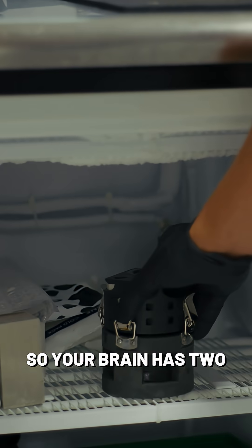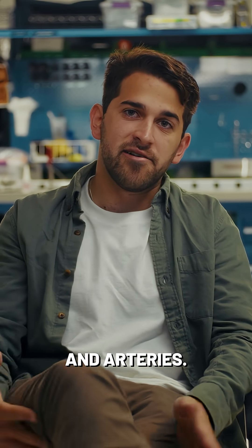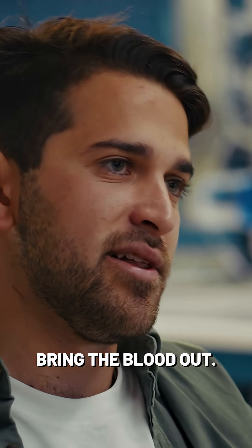So your brain has two types of blood vessels in it. It has veins and arteries. Arteries bring the blood in and veins bring the blood out.